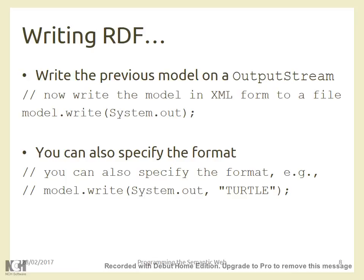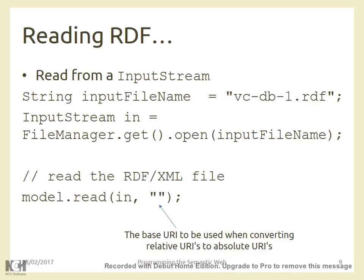To read RDF it is similar: define the filename, open it as an InputStream, then call model.read(). The read method accepts two parameters: the InputStream and a base URI that Jena uses to convert relative URLs into absolute URLs. Typically this base URI is an empty string if you expect absolute URLs, but you can prepend a portion of the URL if needed.